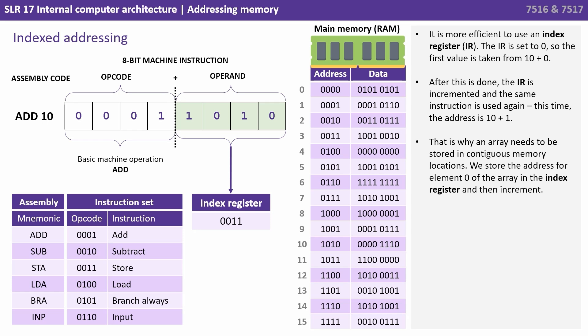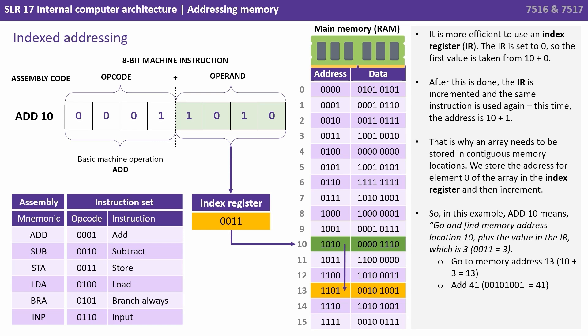It is more efficient to use an index register. The index register is set to 0 so the first value is taken from 10 plus 0. After this is done the index register is incremented and the same instruction is used again — this time the address is 10 plus 1. That is why an array needs to be stored in contiguous memory locations. We store the address of element 0 of the array and then increment. So in this example ADD 10 means go and find memory address location 10 plus the value in the index register, which is 3. Go to memory address 13 (10 plus 3) and add 41.